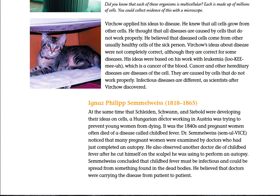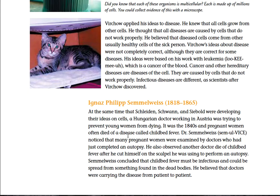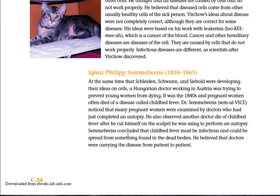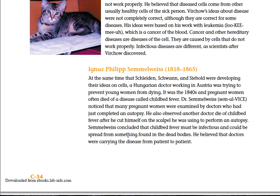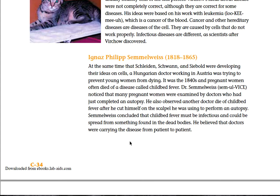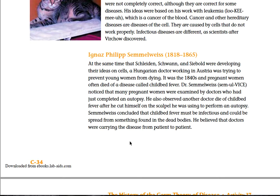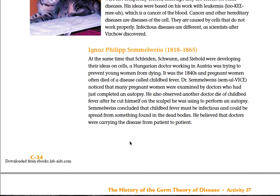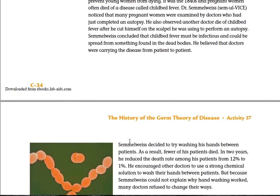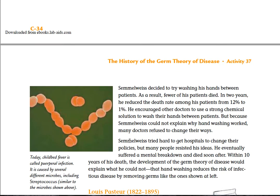Ignaz Philipp Semmelweis, 1818–1865. At the same time that Schleiden, Schwann, and Siebold were developing their ideas on cells, a Hungarian doctor working in Vienna was trying to prevent young patients from dying. It was the 1840s when pregnant women often died of a disease called childbed fever. Dr. Semmelweis noticed that many pregnant women were examined by doctors who had just completed an autopsy. He also discovered that another doctor died of childbed fever after cutting himself on a scalpel used in an autopsy. Semmelweis concluded that childbed fever must be infectious and could be spread from something found in dead bodies. He believed that doctors were carrying the disease from patient to patient. Semmelweis decided to try hand washing between patients, and as a result, fewer of his patients died.